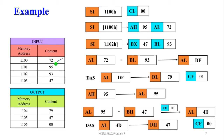In the example: memory address 1100 contains 72 (lower byte of the minuend), 1101 contains 95 (higher byte of the minuend), 1102 contains 93 (lower byte of the subtrahend), and 1103 contains 47 (higher byte of the subtrahend). Load address 1100 into SI; clear CL to 00. Load AX from [SI]: AL = 72, AH = 95. Load BX from [SI+2]: BL = 93, BH = 47.